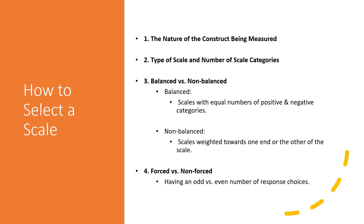The last consideration is odd versus even number of response choices. As discussed with itemized scales, an even number of response choices actually forces consumers to take a position, while an odd number provides a neutral option. That covers our discussion about different types of scales for measurement.